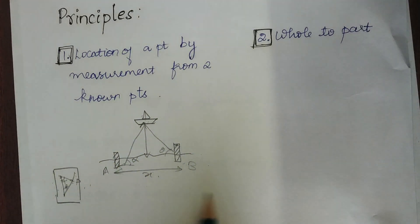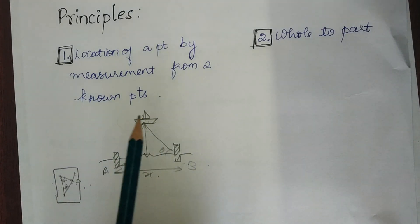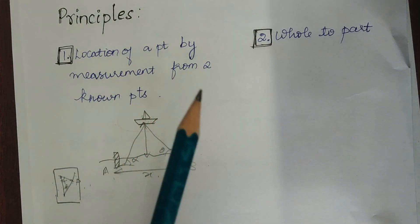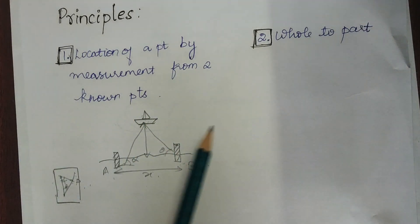For finding the distance or to establish the position of this ship, we have used two points. This is the principle of surveying: in order to find the location of one point, you have to establish two control points.